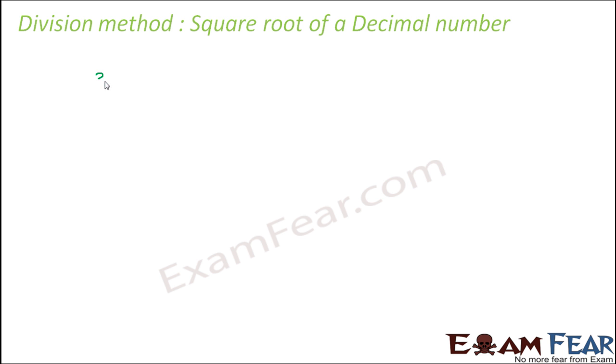So let us take some examples of decimal numbers like 31.36. Let's say you have to find the square root of 31.36 or 135.61 or 1635.613. So these are three varieties of decimal numbers and you have to find their square root.